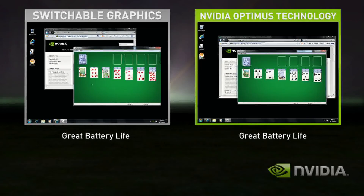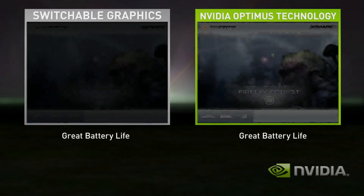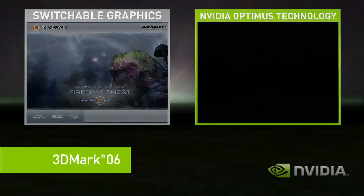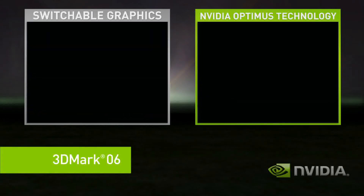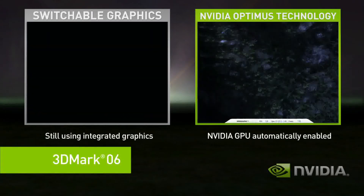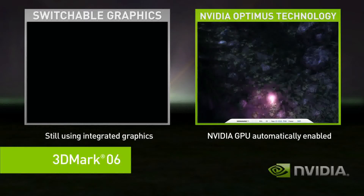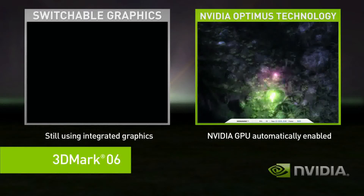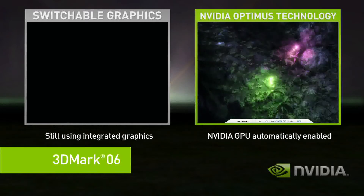However, you get bad performance when you use a complex application, like a 3D game or GPU-accelerated multimedia application. In this demo, we'll use the benchmark 3DMark. Optimus, on the right-hand side, when it starts a complex application, it automatically uses the discrete GPU.